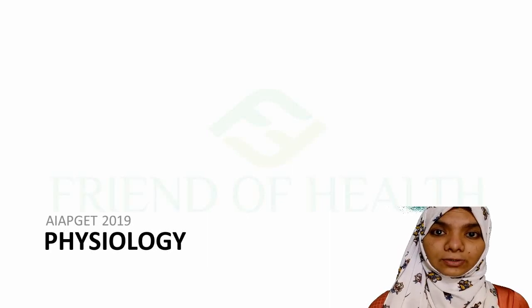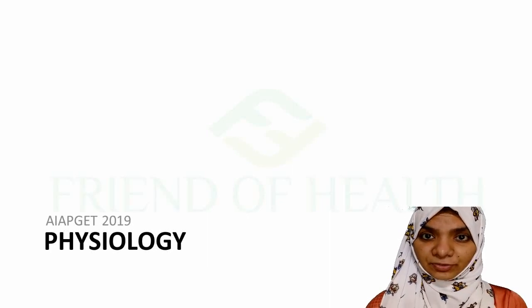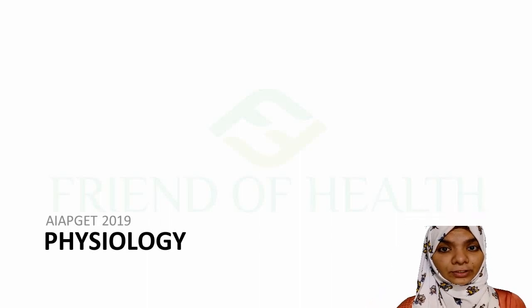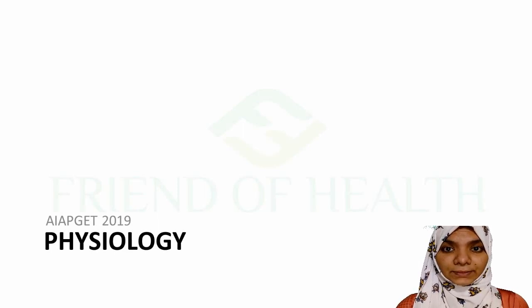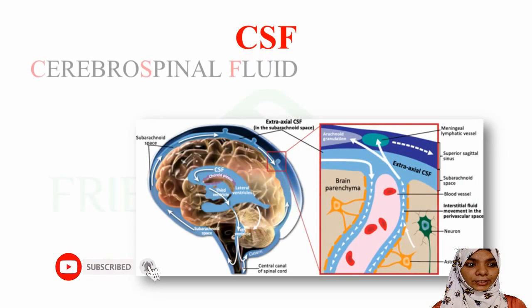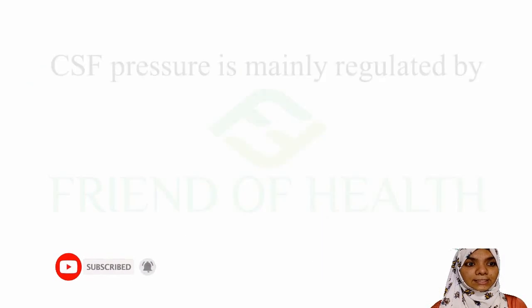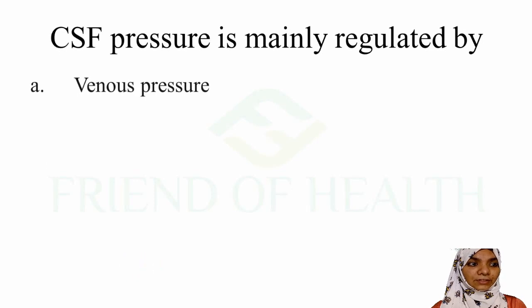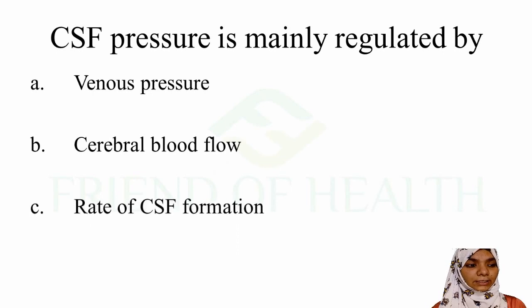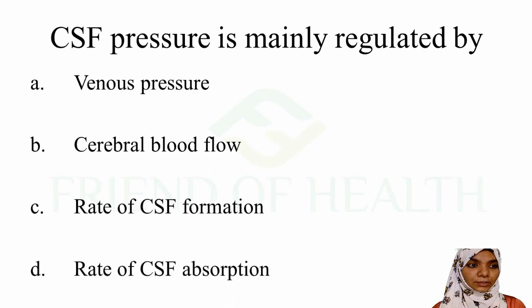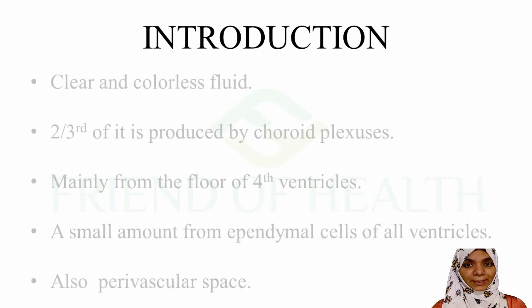We will see CSF - its function, its components, and also some applied aspects. Cerebrospinal fluid is one of the frequently asked topics, so please watch this video completely. The question is: CSF pressure is mainly regulated by - A: venous pressure, B: cerebral blood flow, C: rate of CSF formation, D: rate of CSF absorption.